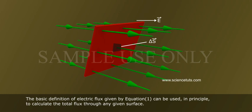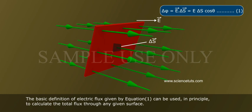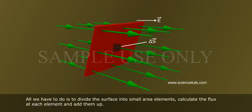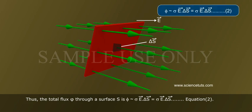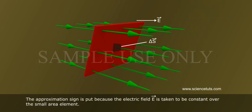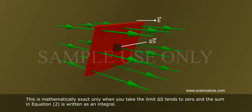The basic definition of electric flux, given by equation 1, can be used in principle to calculate the total flux through any given surface. All we have to do is to divide the surface into small area elements, calculate the flux at each element and add them up. Thus, the total flux phi through a surface s is phi approximately equals sigma e bar dot delta s bar, equation 2. The approximation sign is put because the electric field e bar is taken to be constant over the small area element. This is mathematically exact only when you take the limit delta s tends to 0 and the sum in equation 2 is written as an integral.